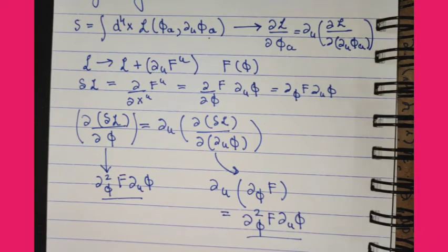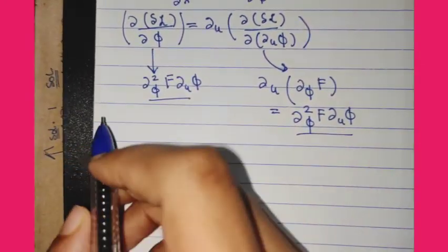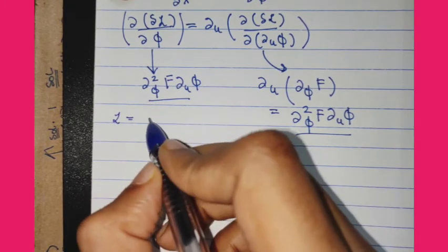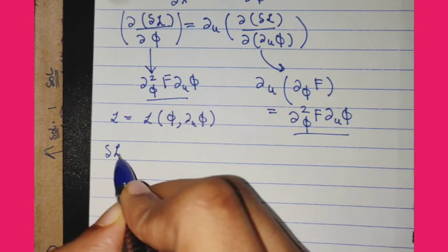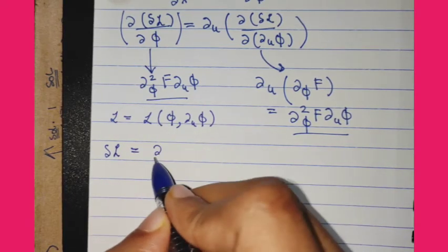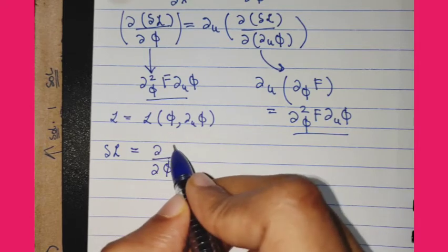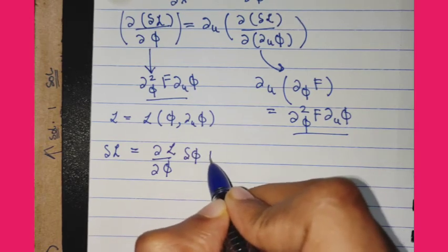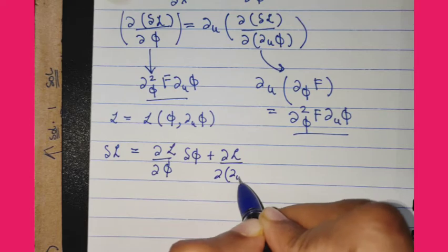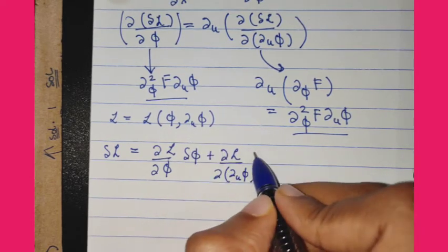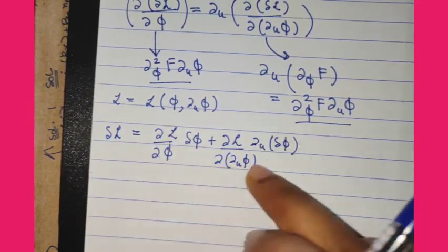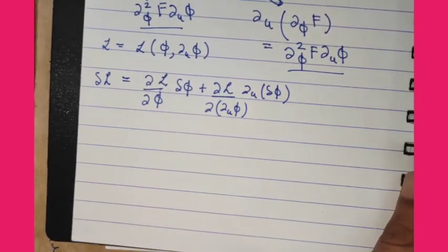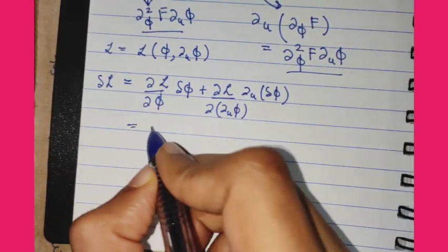Now that we have found that changing the Lagrangian by a total derivative leaves the equation of motion unchanged, we can also follow a different path. The Lagrangian density L is a function of phi and del_mu phi. A small variation in the Lagrangian can be written using the chain rule as: delta L equals del L over del phi times delta phi, plus del L over del(del_mu phi) times del_mu of delta phi.